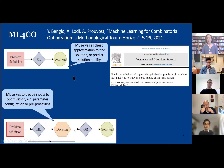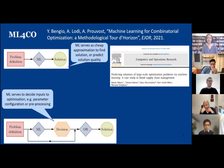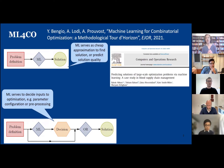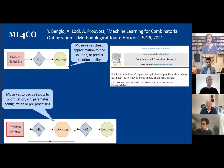The second approach is where machine learning serves as an input into the optimization problem. You've got your problem, your OR techniques, your optimization techniques aiming to find a solution, and machine learning supports some decision making into that process — whether that's parameter configuration or pre-processing decisions about whether decomposition or linearization would be useful.